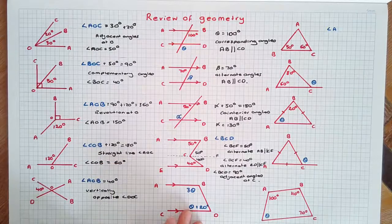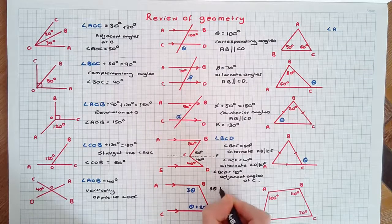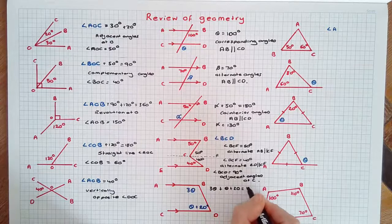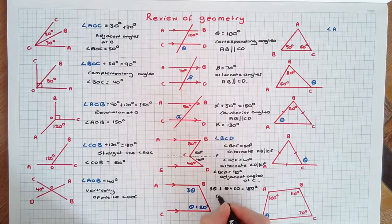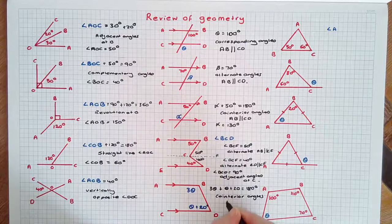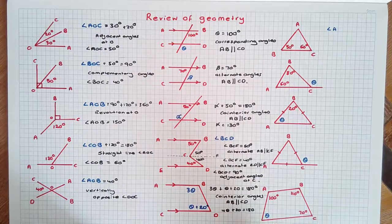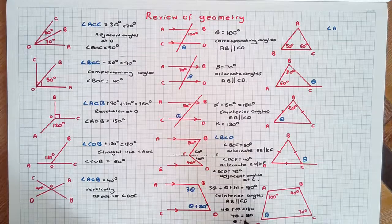Algebra can also be used when solving geometry problems. Here we have two parallel lines and a transversal. Using the co-interior rule: 3 theta plus theta plus 20 equals 180 degrees because they're co-interior on line AB parallel to CD. Combining like terms, we get 4 theta plus 20 equals 180 degrees. Therefore 4 theta equals 160 degrees, and theta finally equals 40 degrees.